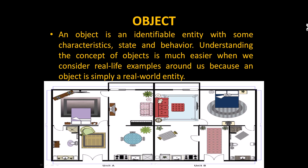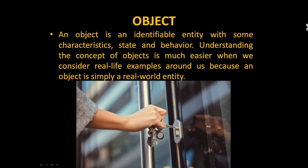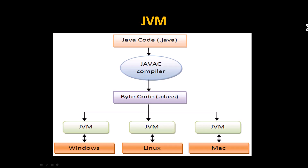Everything around us can be considered as an object. For example, if you consider a TV as an object, it will have certain attributes like length, dimensions, pixels, and so on. In a similar manner, you can use objects from real life. An object is an instance of a class — it acts as a key which allows you to access all the different rooms inside the house.